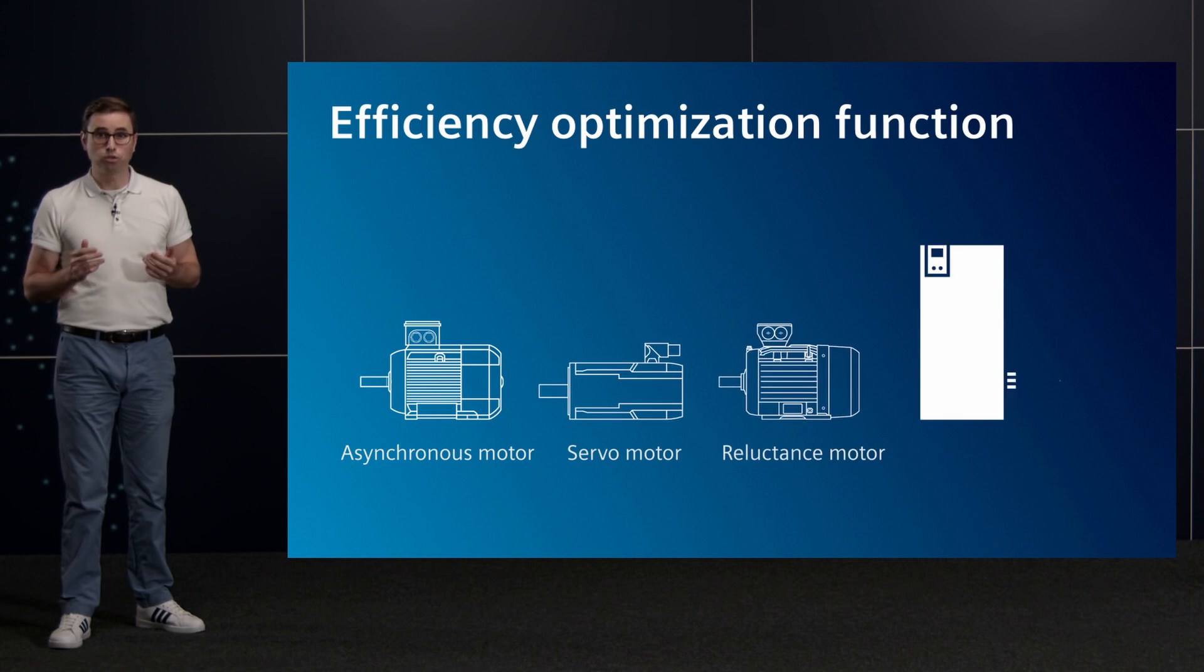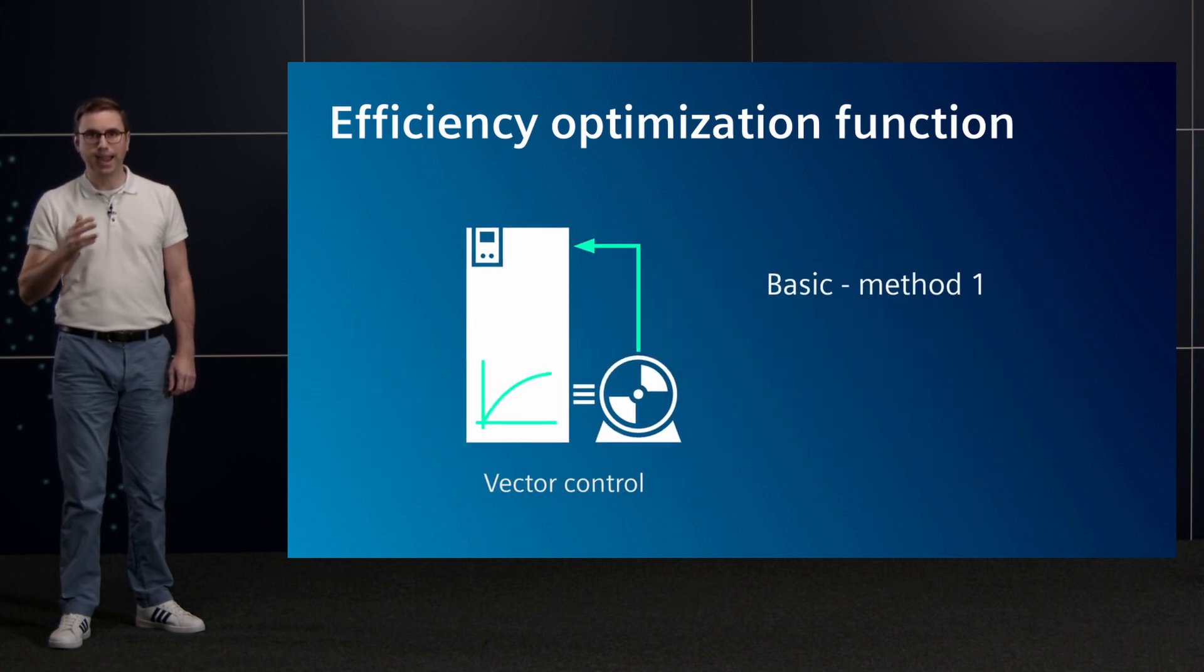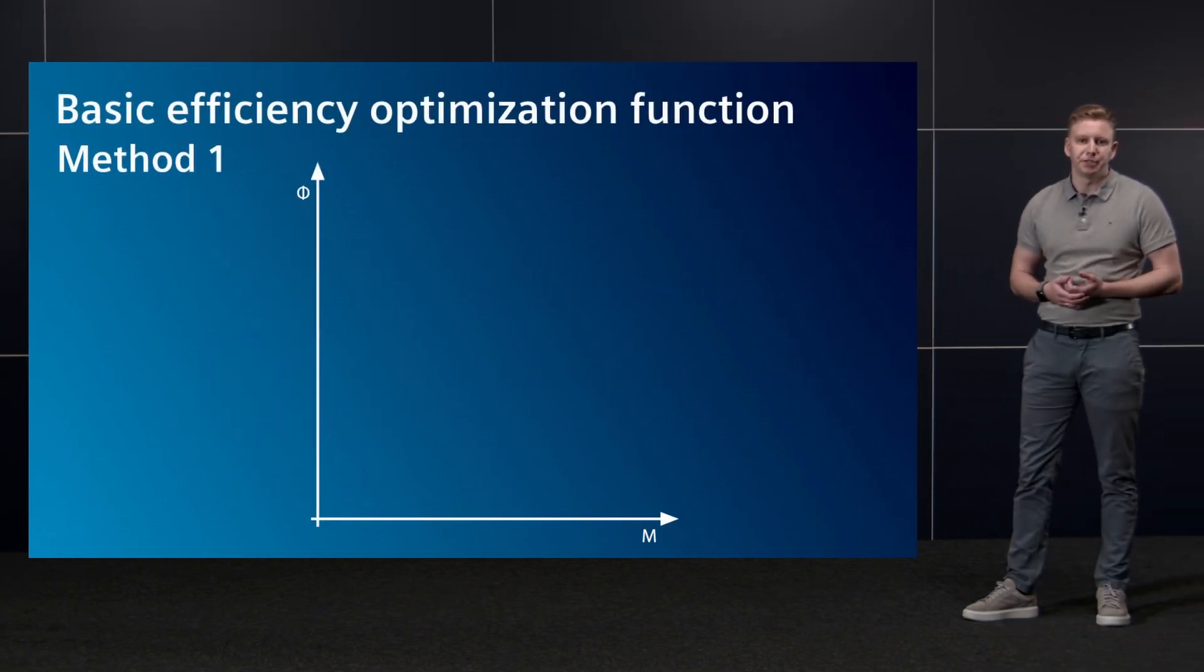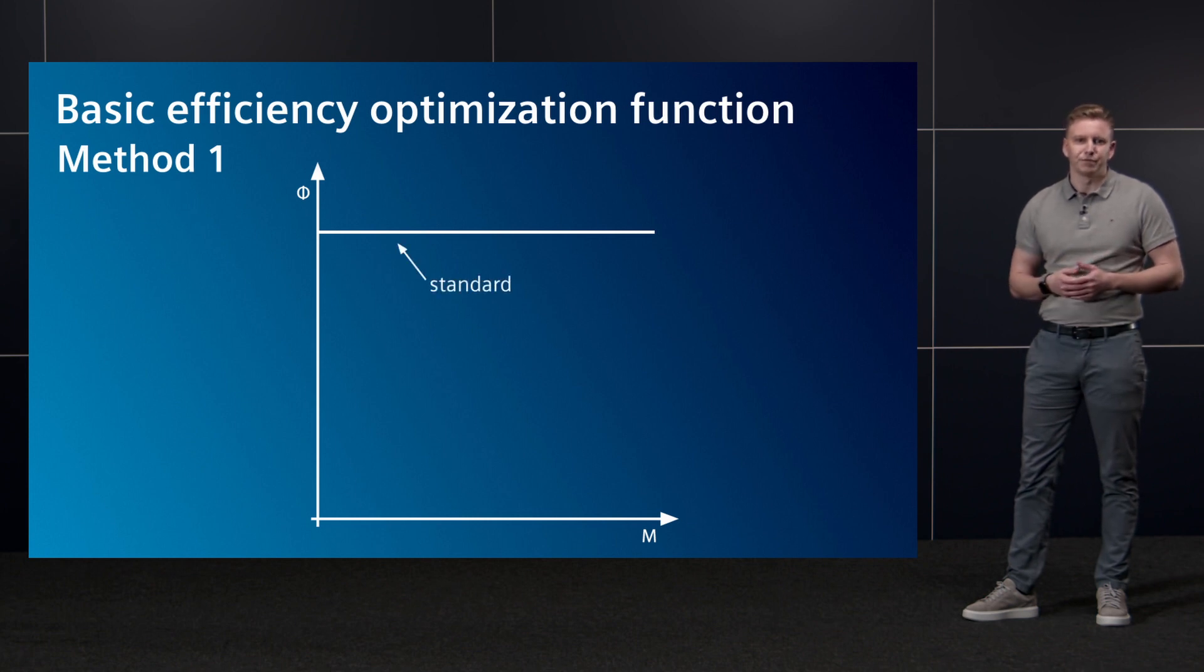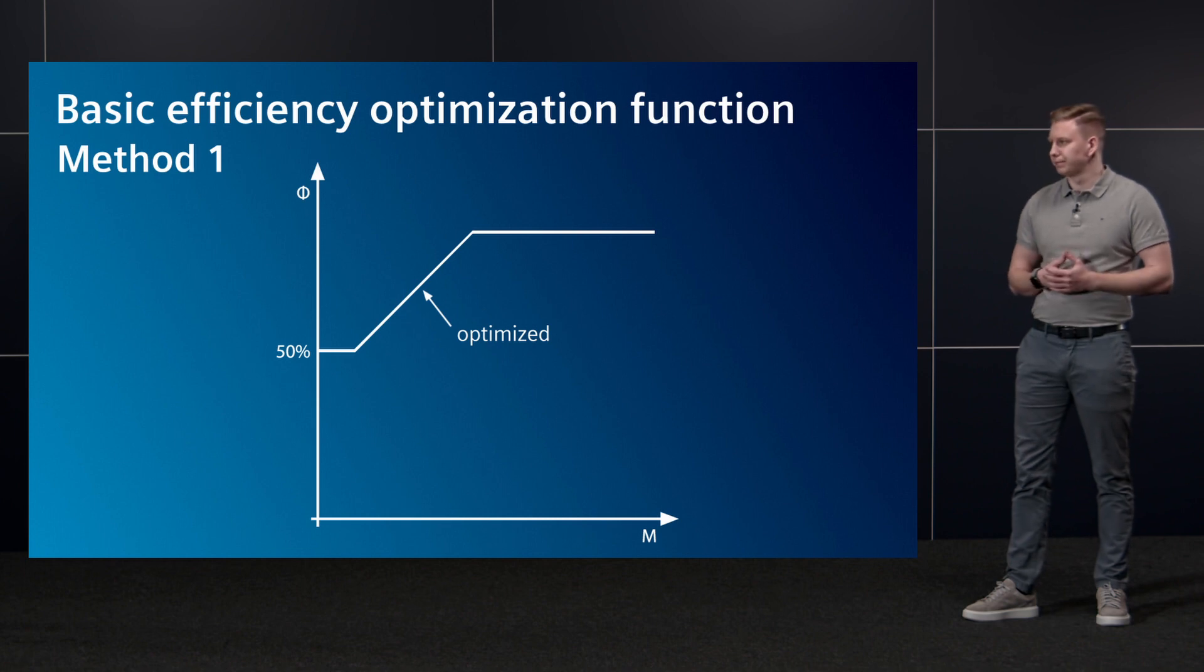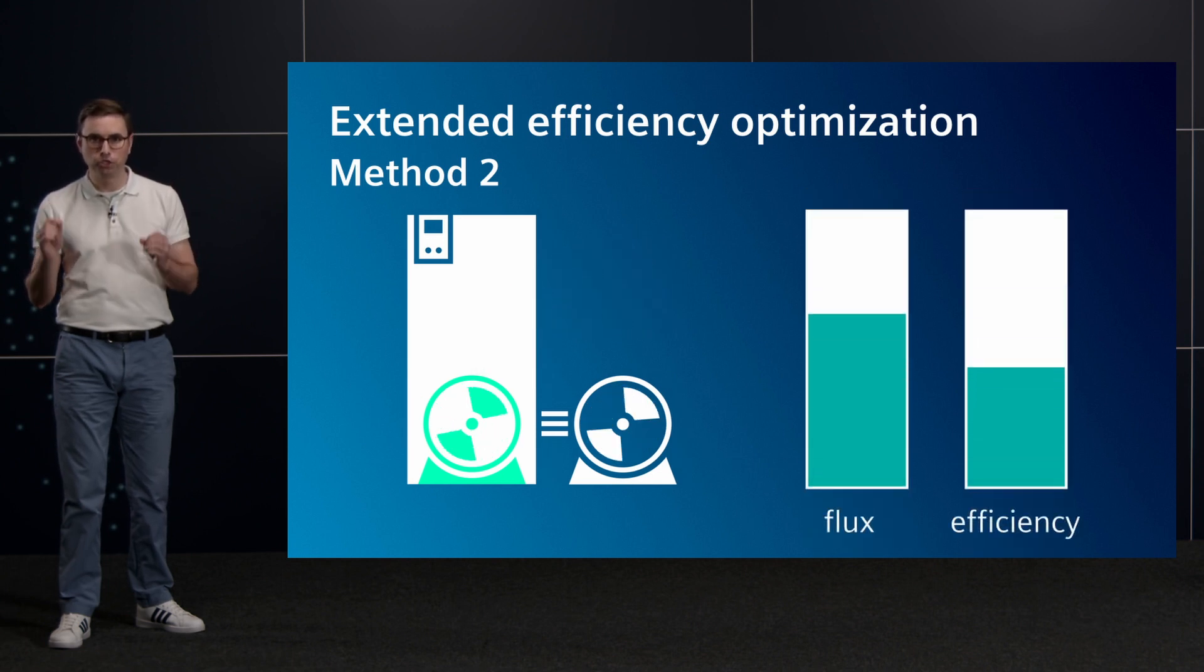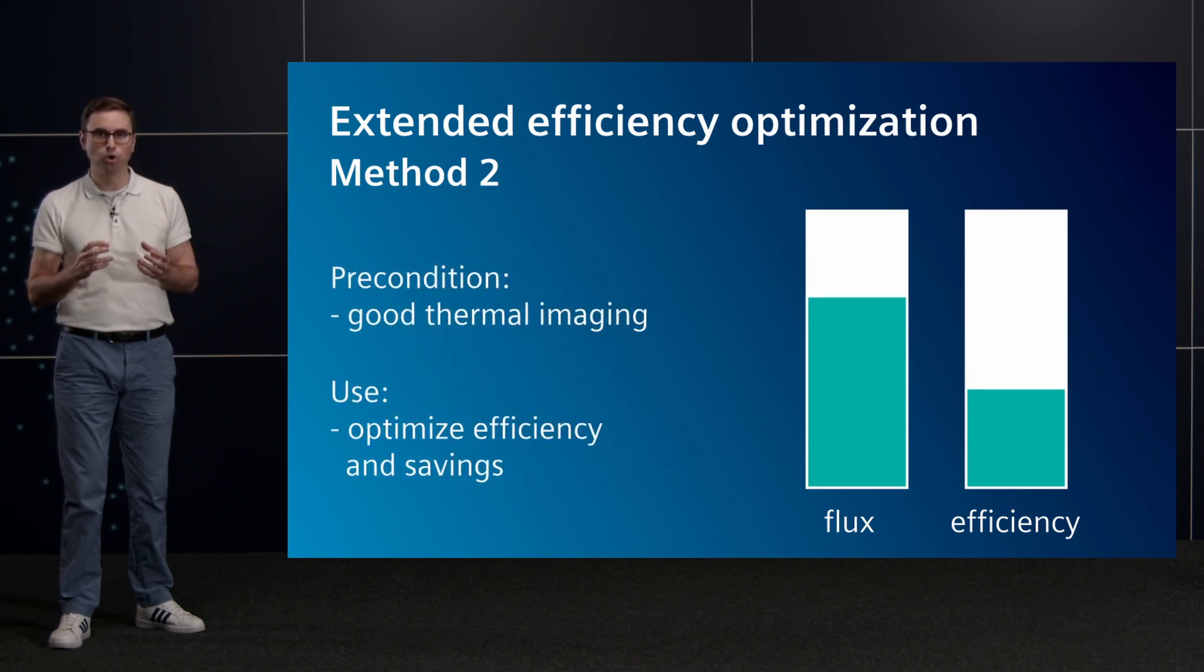For motors that are operated with vector control and have low dynamic requirements, the flux can be optimized using the efficiency optimization function. This function provides both basic and extended efficiency optimization. Basic efficiency optimization decreases the flux setpoint linearly as a function of the torque as shown in this diagram. Without efficiency optimization, the flux setpoint would be constant over the entire torque range. By simply changing the parameters, the flux can be lowered to 50 percent when idling and then increases linearly again with the torque. Even greater efficiency can be achieved with the extended efficiency optimization option. Good thermal imaging of the motor is needed for this. This method determines the operating point of the motor as a function of efficiency and flux and adjusts the flux accordingly to optimize efficiency.